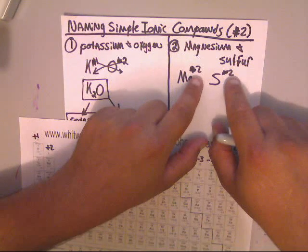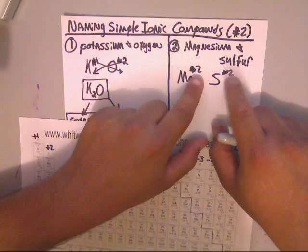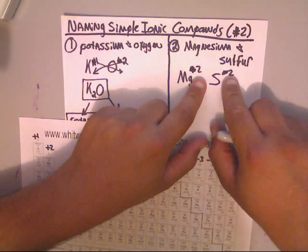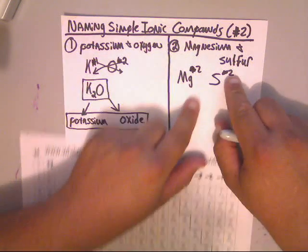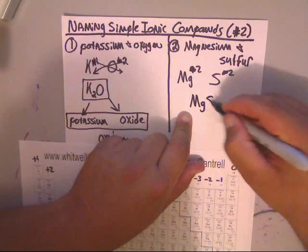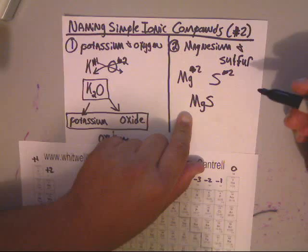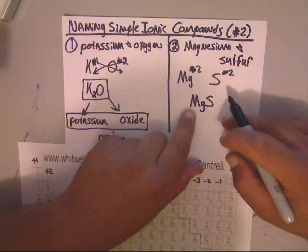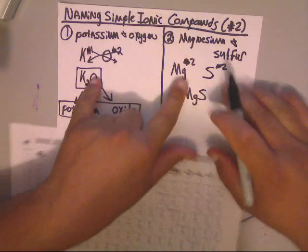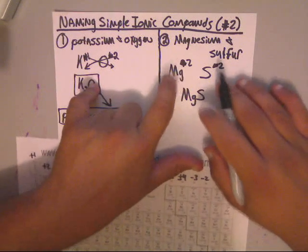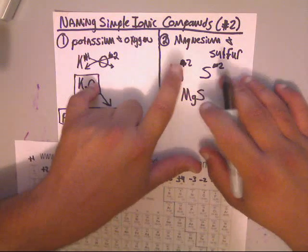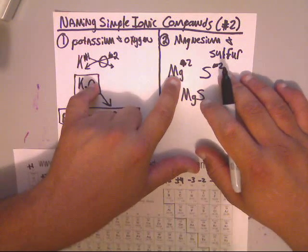Meaning, aren't they multiples of one another? This is a 2, and this is a 2. Couldn't we reduce them by dividing both numbers by 2? Yes, we can. That way, we can just get MgS for our formula. Because if we technically write down Mg2S2, that's not right. Because we can reduce the twos. In these ionic compounds, if you can reduce the subscripts by multiples, please do.